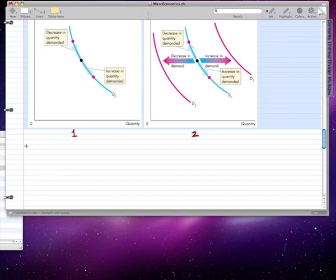But here I'm going to give you the one-on-one. So a movement along the demand curve is when price changes, when everything else stays the same.